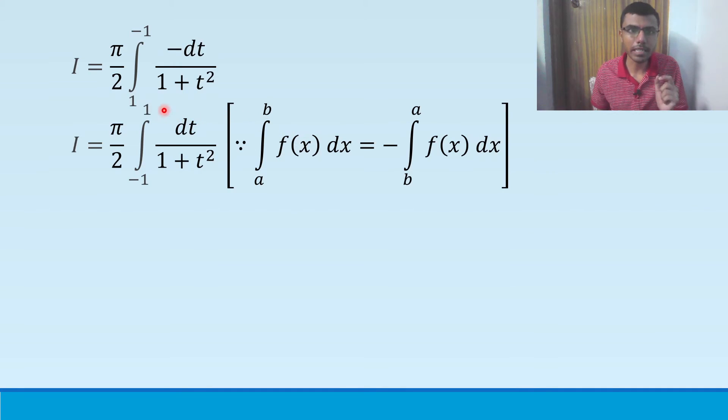dt by 1 plus t square. Now this is a very simple integration. Integral dt by 1 plus t square. What is integral dx by 1 plus x square? Tan inverse x. In place of x, I have here t. So this will be nothing but tan inverse t. Now one more thing, the limits are minus 1 to 1. Tan inverse t, limits are like this, it will come minus 1 to 1.